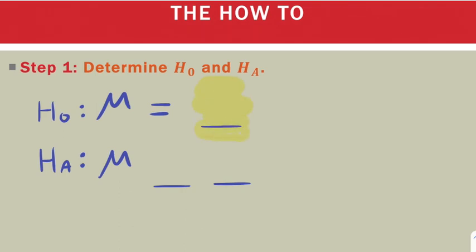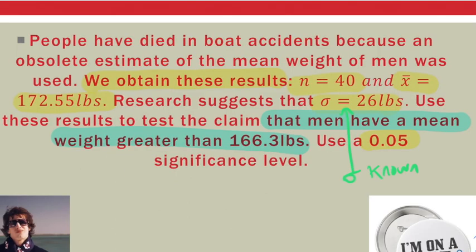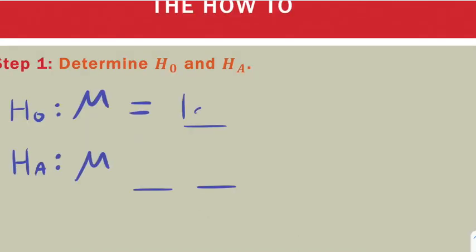The right part of the hypotheses will always be the same. And that's always going to have to do with what number is being suggested. Well, we see a lot of numbers here, but the suggestion in the claim is 166.3 pounds. So that's going to be the number part of each of these hypotheses.